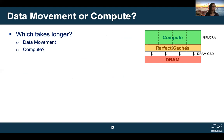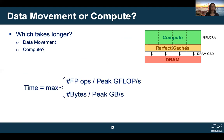The model is premised on answering the question: which takes longer — moving data on and off chip, or doing the computation once data is on chip? We write a simple equation: runtime is the maximum (assuming perfect overlap) of the number of floating point operations divided by the peak flop rate, and the number of bytes moved on and off chip divided by the peak bandwidth. This assumes perfect overlap of communication and computation; without it, you'd sum the two terms.